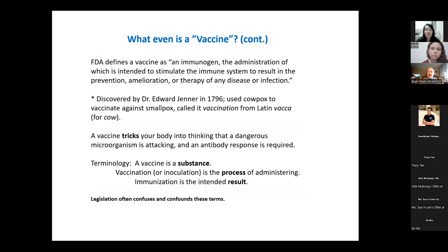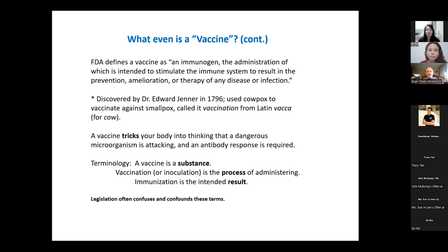That's where we get into vaccines. A vaccine is a trick — a sleight of hand. The U.S. Food and Drug Administration defines a vaccine as an immunogen, the administration of which is intended to stimulate the immune system to result in the prevention, amelioration, or therapy of any disease or infection. It's putting something into your body that makes your body think it's being attacked by a bad organism so it sets up that defense — creating the chemical that will stick to that bad organism so your white blood cells come in and neutralize it. You get the benefit of having that defense without actually having the illness.